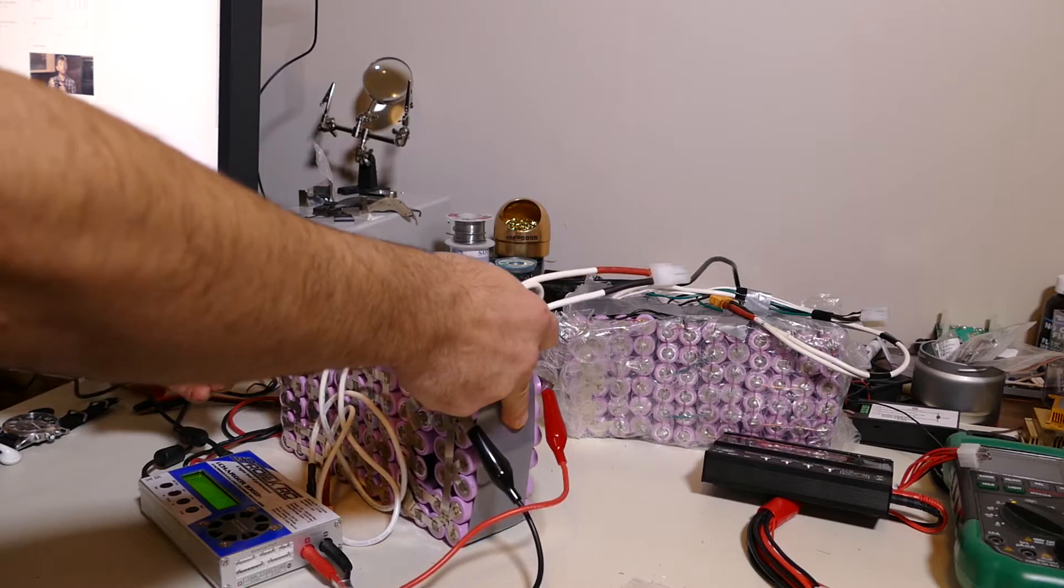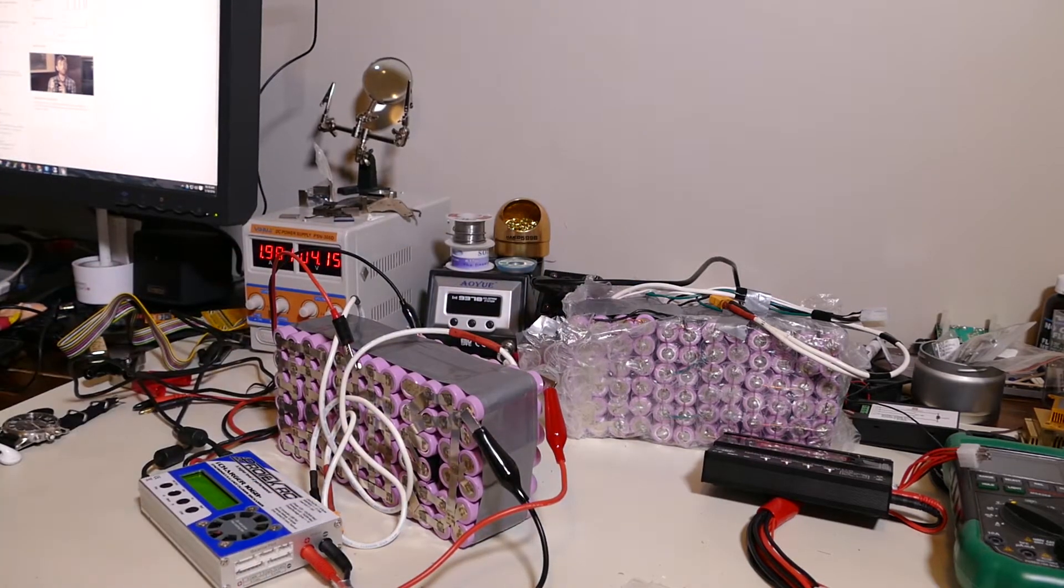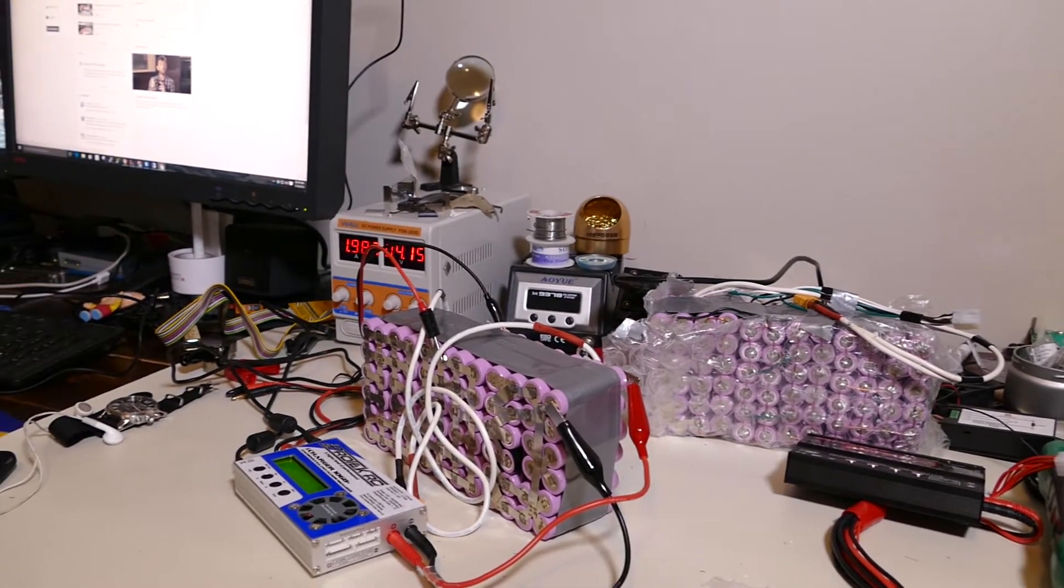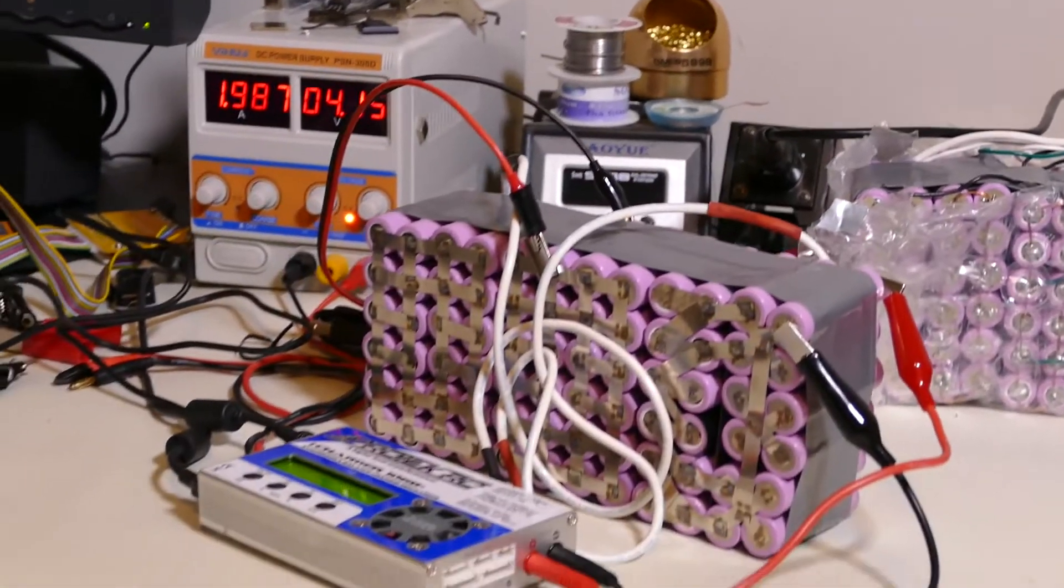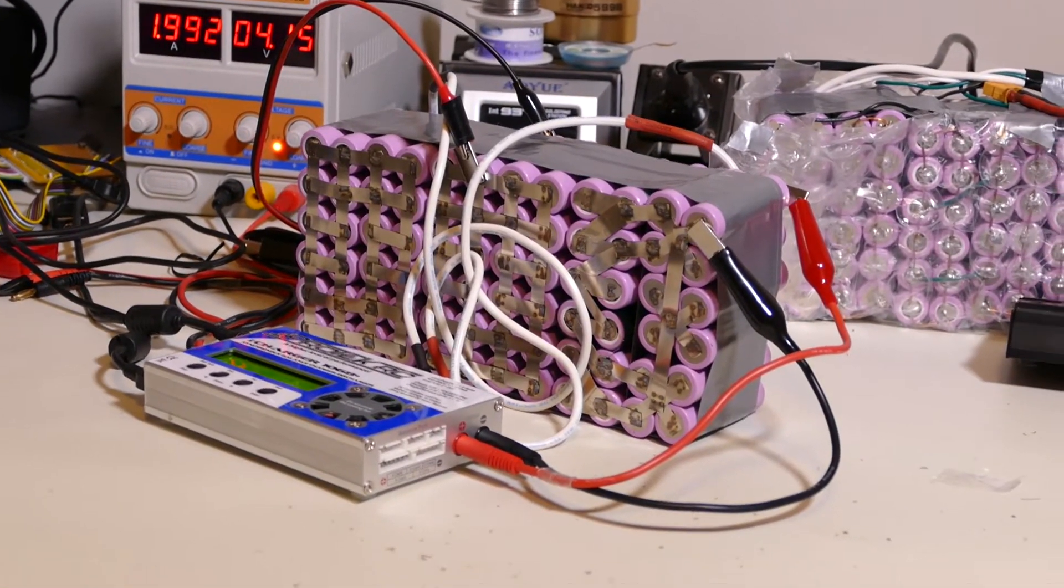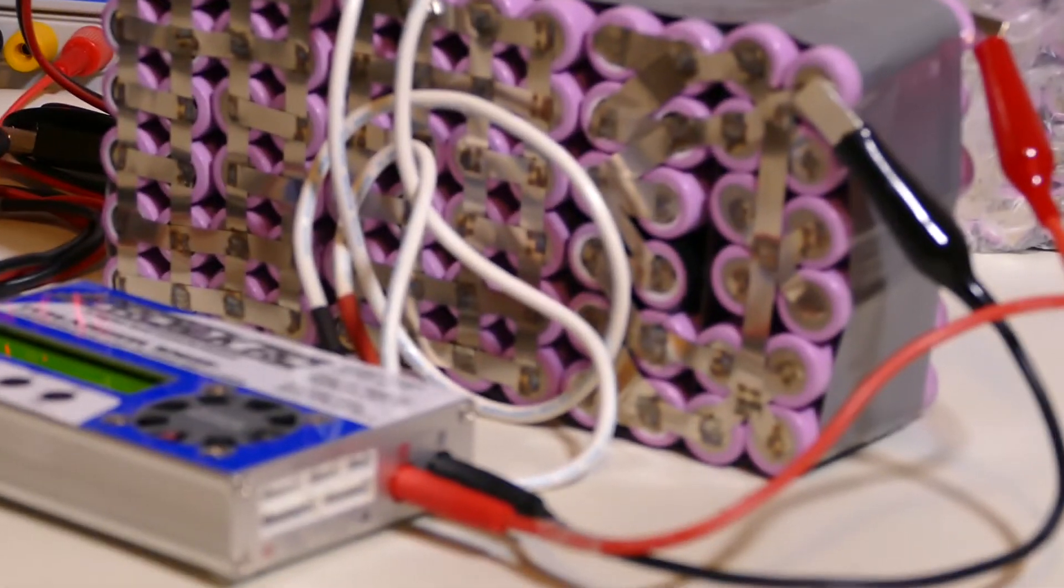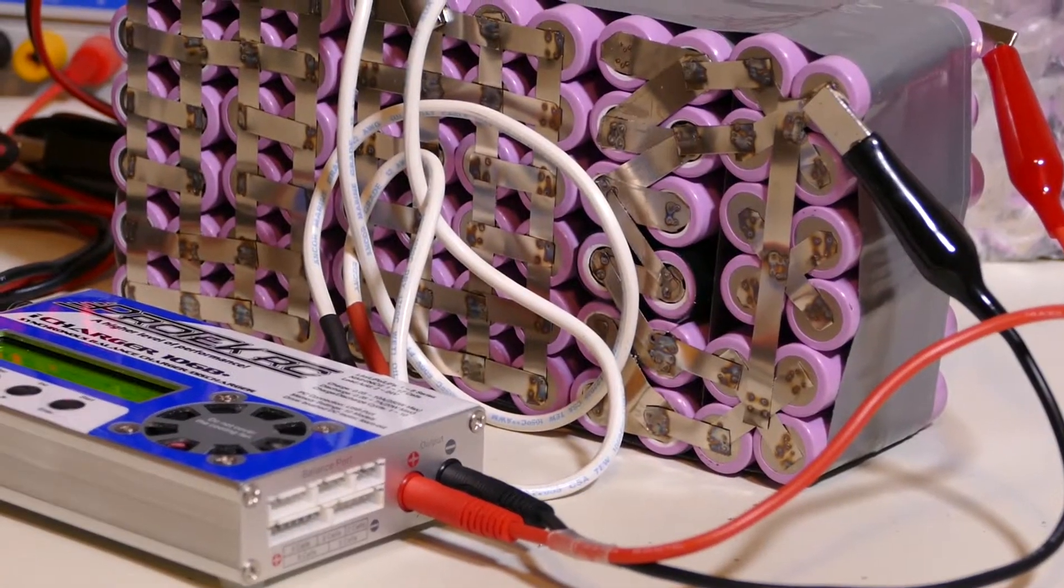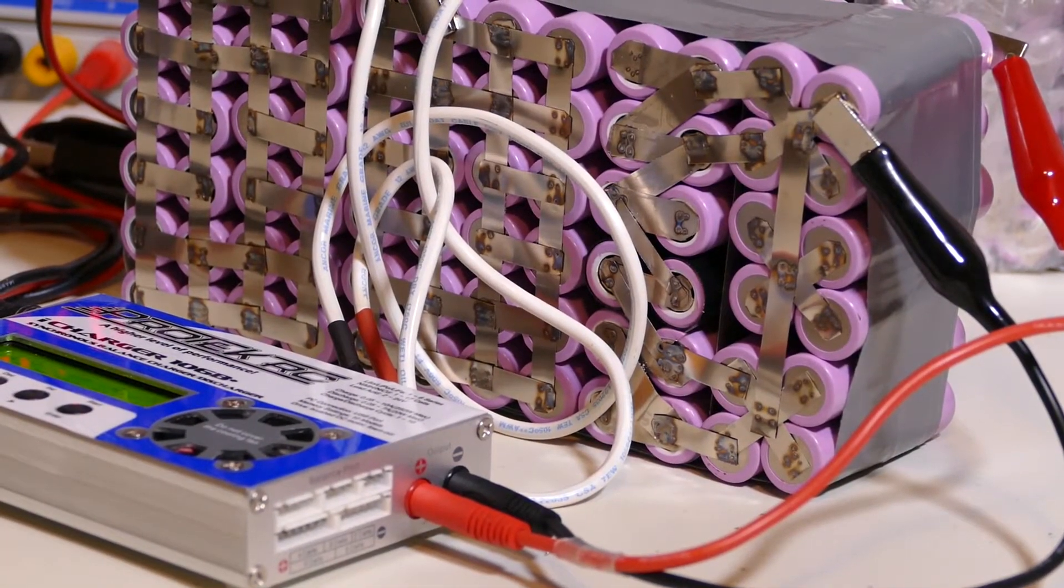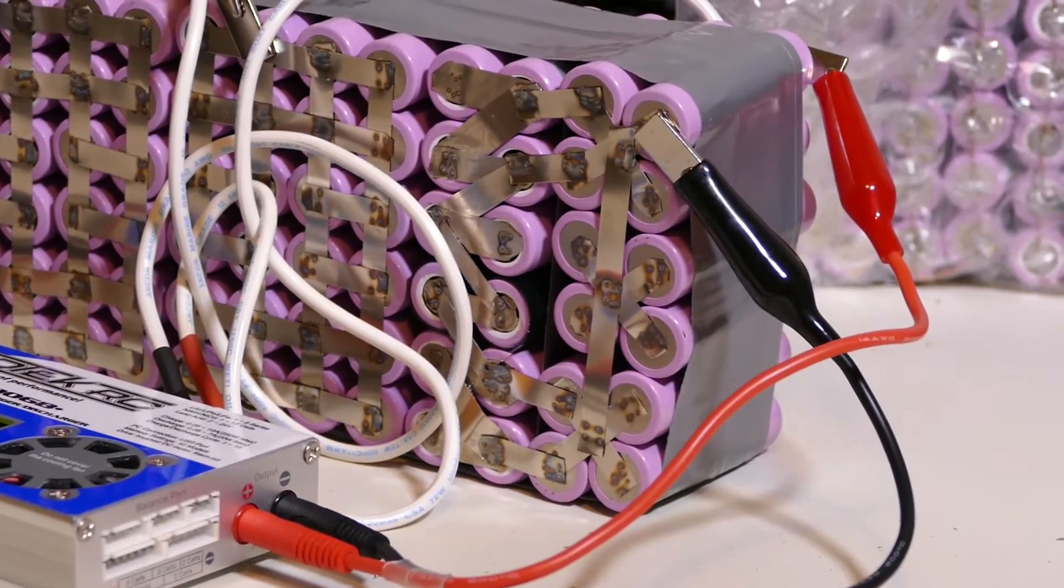Only this time I did use a spot welder, so you guys probably saw some of my videos spot welding these battery packs. One thing I want to point out is I tried experimenting with different ways of spot welding. As you can see, some of these are connected straight down and then across, then there's one here that's kind of crisscrossed.